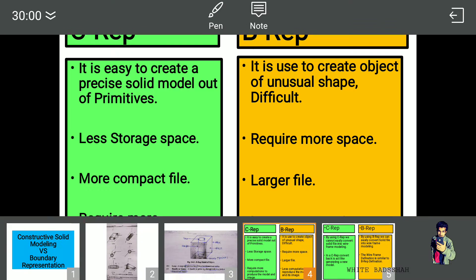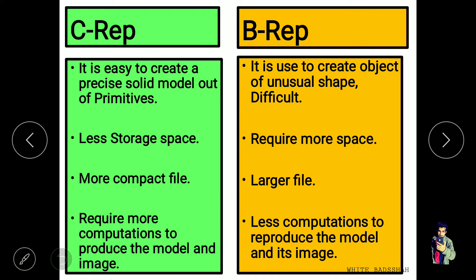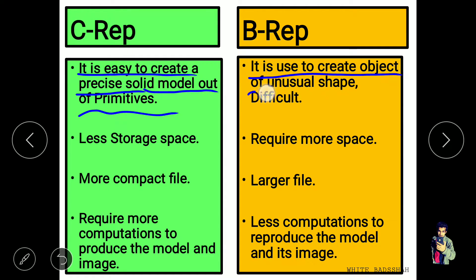Now let's see some differences between CSG and B-Rep. CSG means Constructive Solid Geometry and B-Rep means Boundary Representation. The first point: it is easy to create a precise solid model out of primitives like cylinder, torus, and cone using CSG. But in B-Rep, it is used to create an object of unusual, complex, or difficult shape — we can easily construct a complex geometry type of model.